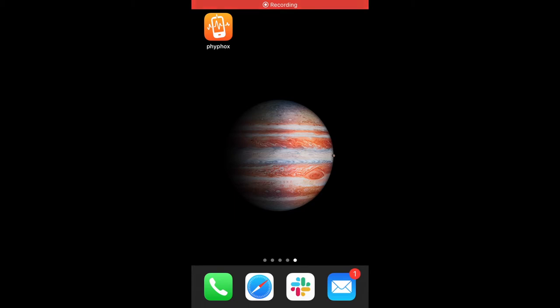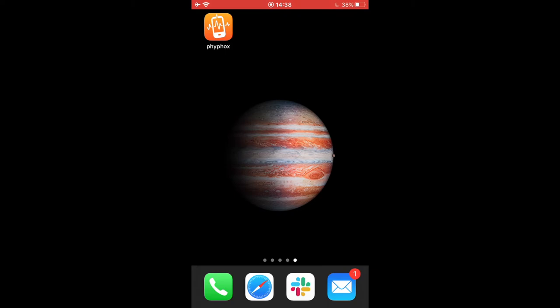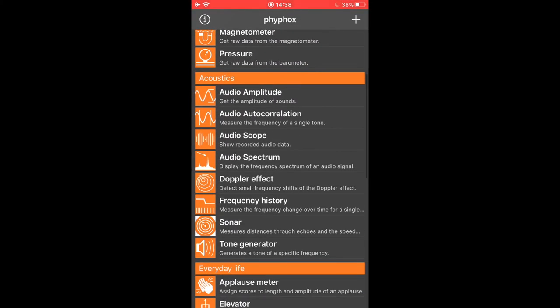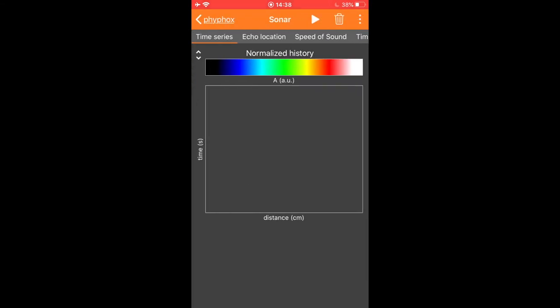To collect data for the sonar experiment, open the Phyphox app on your phone. This will give you several different experiments that you could do with your phone's sensors. We will want to select Sonar. In Sonar, we have several different modes, and we want to choose Timing.